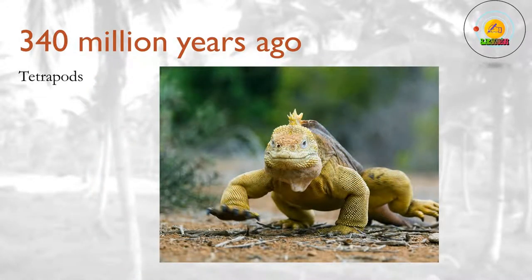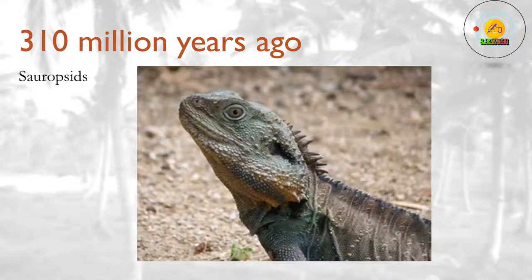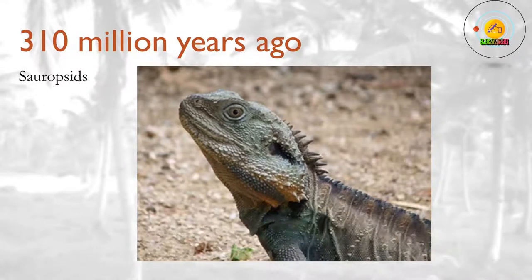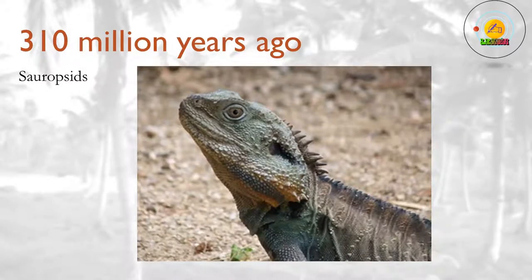340 million years ago? The first major split occurs in the tetrapods, with the amphibians branching off from the others. 310 million years ago? Within the remaining tetrapods, the sauropsids and synapsids split from one another. The sauropsids include all the modern reptiles, plus the dinosaurs and birds. The first synapsids are also reptiles, but have distinctive jaws — they are sometimes called mammal-like reptiles, and eventually evolve into the mammals.